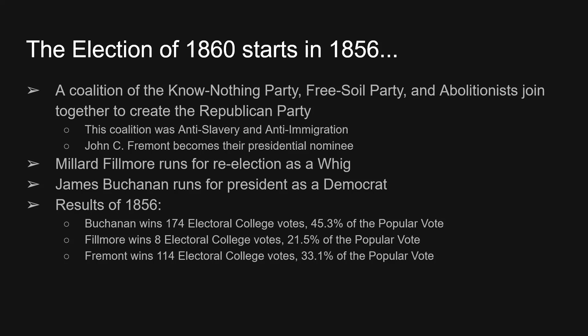James Buchanan will become president — he will win the election. The sitting president, Millard Fillmore, runs for re-election as a Whig and he loses very, very badly. 174 electoral college votes for James Buchanan, 114 for John C. Frémont, and then Millard Fillmore only gets eight electoral college votes. It's really an embarrassing loss for the sitting president.